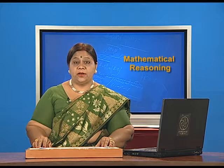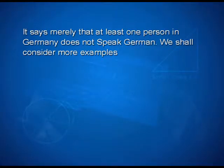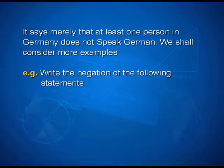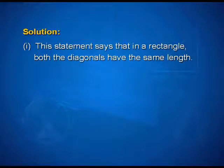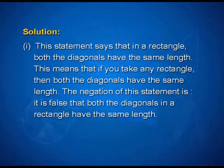Here is an example to illustrate how by looking at the negation of a statement we may improve our understanding of it. Let us consider the statement P: everyone in Germany speaks German. The denial of this sentence tells us that not everyone in Germany speaks German. This does not mean that no person in Germany speaks German — it says merely that at least one person in Germany does not speak German.